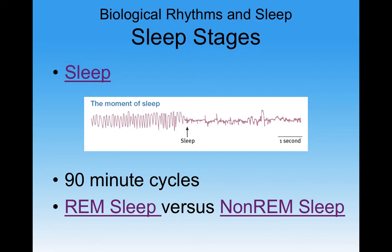The two main stages of sleep are REM sleep and non-REM sleep. REM stands for rapid eye movement, and non-REM is non-rapid eye movement sleep. We'll break non-REM down into different stages — stage one, stage two, et cetera.